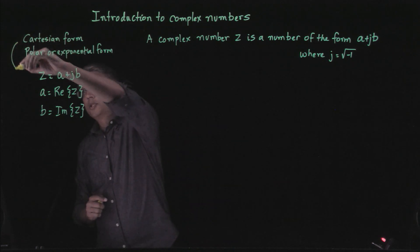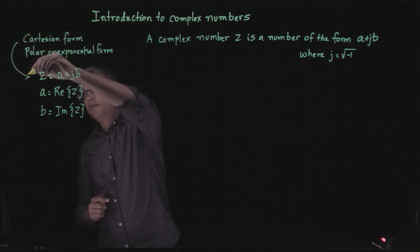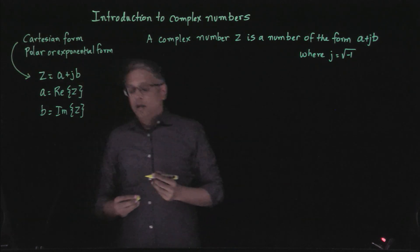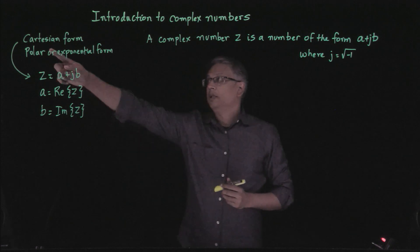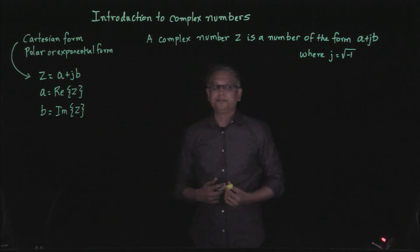When we write a complex number in this form — as a real part plus j times an imaginary part — it is called writing the complex number in Cartesian form, named after the mathematician René Descartes.